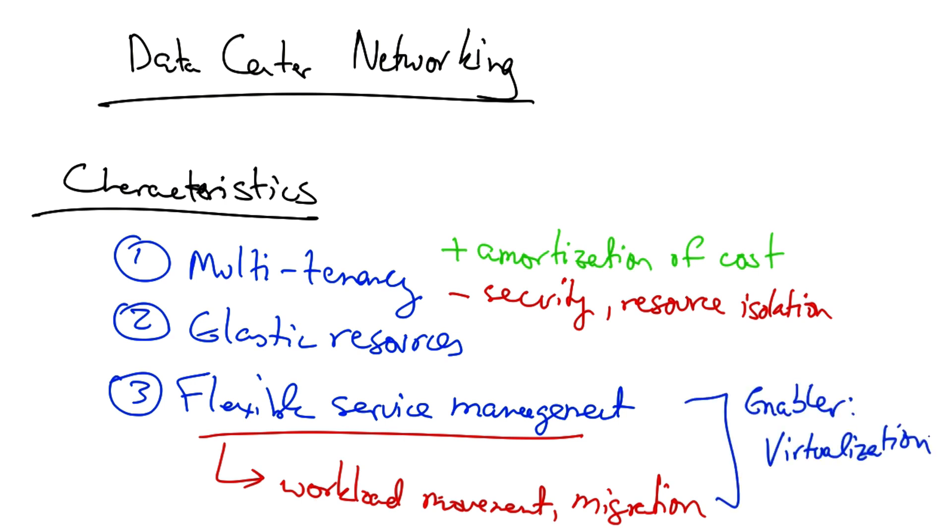A key enabling technology in data center networking is the ability to virtualize servers. This makes it possible to quickly provision, move, and migrate servers and services in response to fluctuations in workload. But while provisioning servers and moving them is relatively easy, we must also develop traffic engineering solutions that allow the network to reconfigure in response to changing workloads and migrating services.